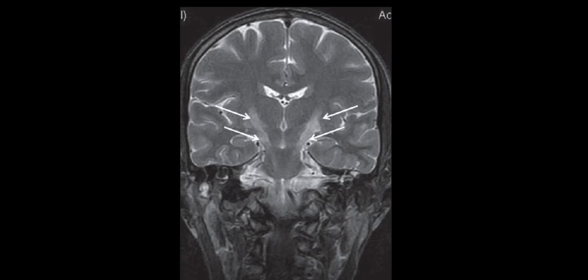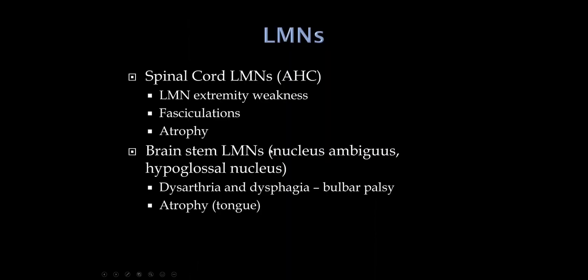On MRI, we can sometimes see the Wallerian degeneration of the corticospinal and corticobulbar tracts as they travel through the genu and internal capsule and through the pons. There's upper motor neuron involvement and lower motor neuron involvement. When the anterior horn cells are knocked out, there's weakness, fasciculations, atrophy, and loss of reflexes. The brainstem lower motor neurons mainly affected are nucleus ambiguus and the hypoglossal nucleus, causing dysarthria and dysphagia.